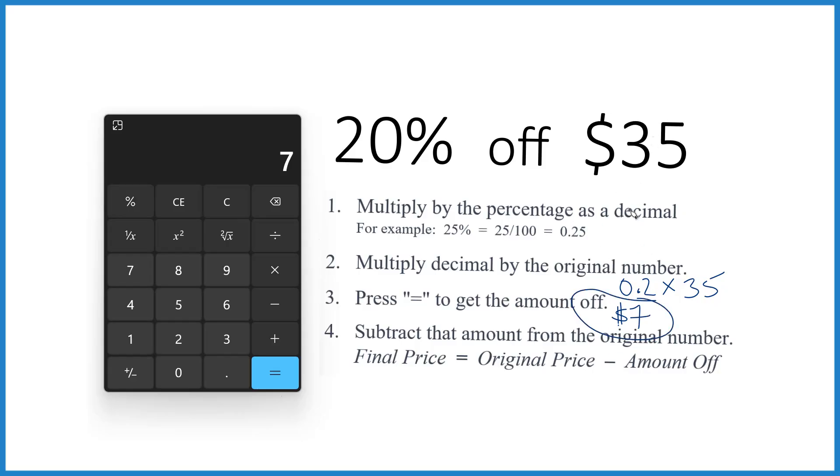If you want to know the final price, you just take that $35 minus the amount you got off, the $7 there. 35 minus 7, that is $28. So you'd be paying $28 for an item that's $35, but you got that 20% off.